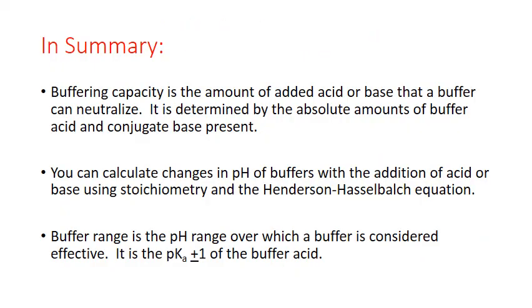In summary, buffering capacity is the amount of added acid or base that a buffer can neutralize, determined by the absolute amounts of buffer acid and conjugate base present. You can calculate changes in buffer pH using stoichiometry and the Henderson-Hasselbalch equation. Buffer range is the pH range over which a buffer is considered effective, determined by the ratio of base to acid, and equals the pKa plus or minus 1 of the buffer acid.